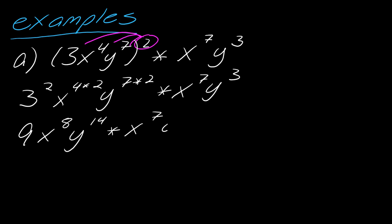This is going to be 9x to the 8th y to the 14th, and now I can add the exponents that are left over. I've got x to the 8th and x to the 7th, so 8 plus 7 is 15. This will be 9x to the 15th. And then y to the 14th and y to the 3rd, so add those - y to the 17th. Done.